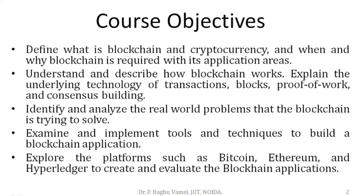The course objectives are as follows: after completion of this course, students will be in a position to define what blockchain is and what is meant by cryptocurrency, and understand when and why blockchain is required with its application areas. They can describe how blockchain works, explain the underlying technology of transactions, blocks, the mining algorithm called Proof of Work in the case of Bitcoin, consensus building, and other consensus protocols. Students will also identify and analyze real-world problems that blockchain is trying to solve.